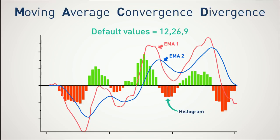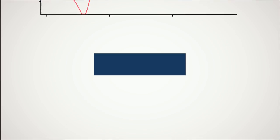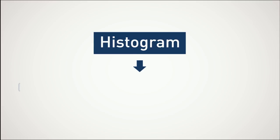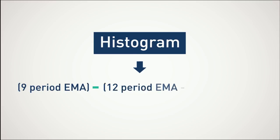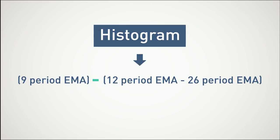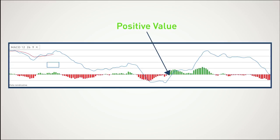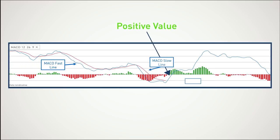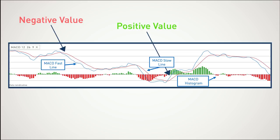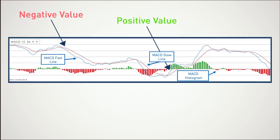The last component of the indicator is the histogram, which displays the difference between the two EMAs of the indicator. Thus, the histogram gives a positive value when the fast line crosses above the slow line, and negative when the fast crosses below the slow line.